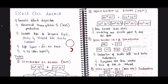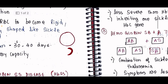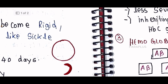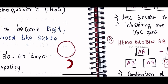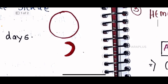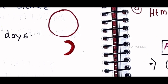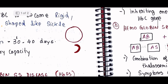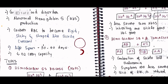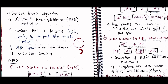Sickle cell anemia is a type of anemia. This is a normal hemoglobin cell. The sickle cell has a crescent shape — half moon shape, also described as a C-shape or sickle shape. This abnormal shape is the core problem in sickle cell anemia.